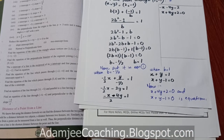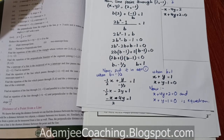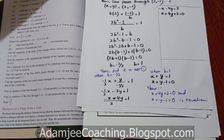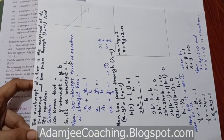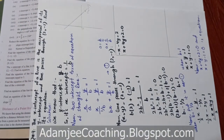تو final answers ہیں: x plus 4y plus 2 equals to 0 اور x plus y minus 1 equals to 0۔ یہ تھا آپ کے پاس Exercise 7.3 کا question number 9۔ I hope آپ کو آیا ہوگا۔ ویڈیو کو like کریں، channel کو subscribe ضرور کیجیے گا۔ Thank you so much, Allah Hafiz۔